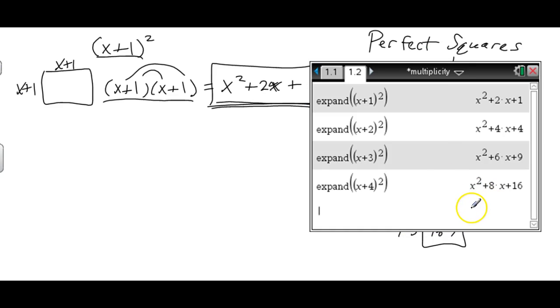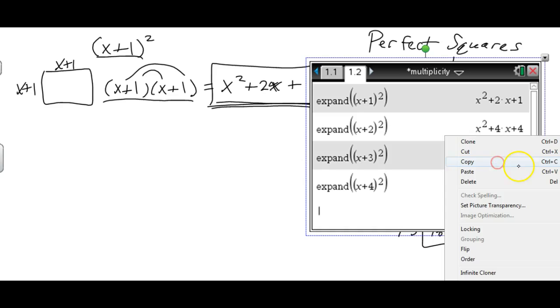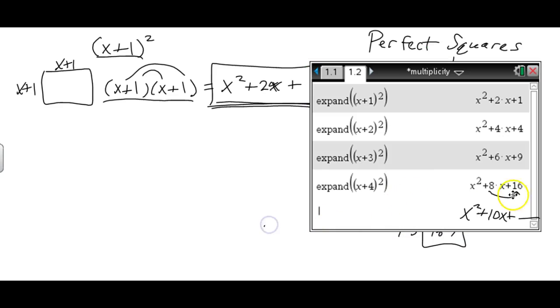You can see the pattern: x squared plus 2x plus 1. Maybe you might even be able to guess what the next binomial squared is. If I told you this was 10x, I bet you could tell me what that is. What number would go right there? How did you get from 8 to 16? How do you get from 6 to 9? They see that if you take half of 10 and square it, you get 25.